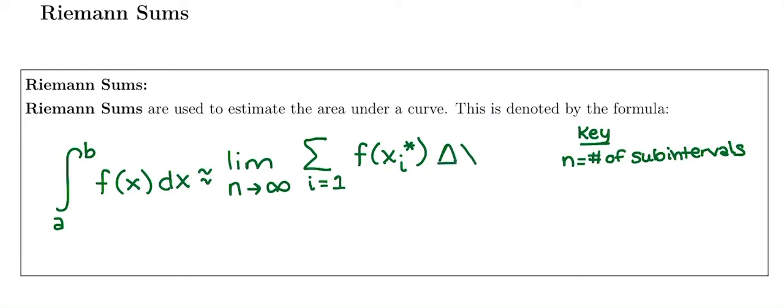And we're going to multiply that by delta x. So the other thing we need to know from this formula is delta x is our width. And it has the formula b, our upper bound, minus a, our lower bound, divided by n, our number of subintervals.